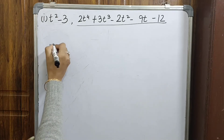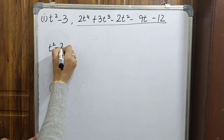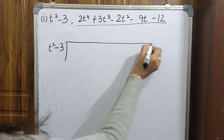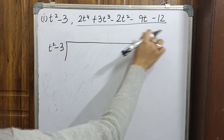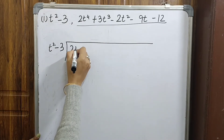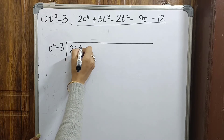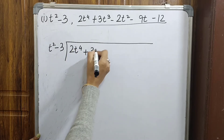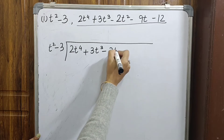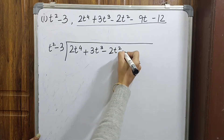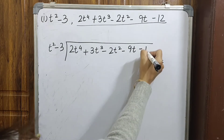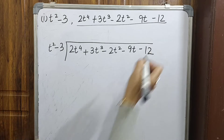Now let us divide and see. The divisor is t² minus 3, and the dividend is 2t⁴ + 3t³ - 2t² - 9t - 12.